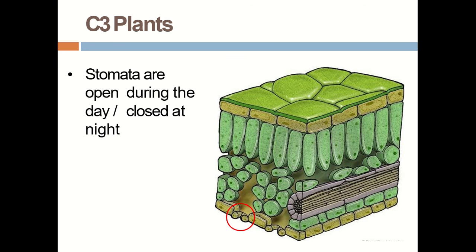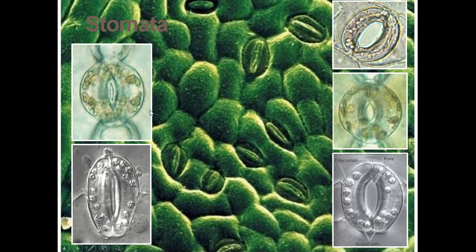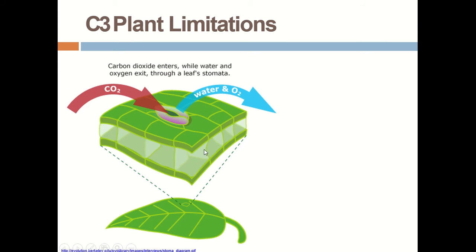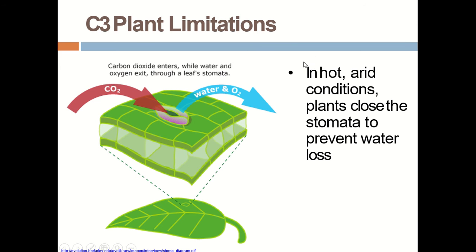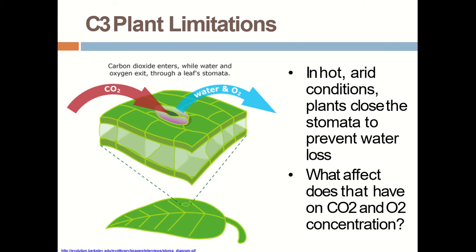In C3 plants, stomata are open during the day — that is the mandatory condition — and closed at night. In hot and arid conditions, plants close their stomata to prevent water loss. As asked about what happens to stomata in hot and arid conditions: in this condition, stomata mostly remain closed and this prevents water loss.